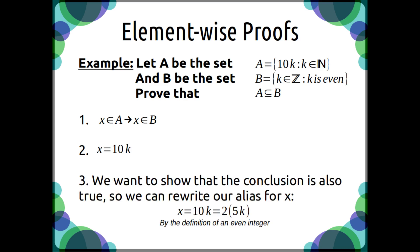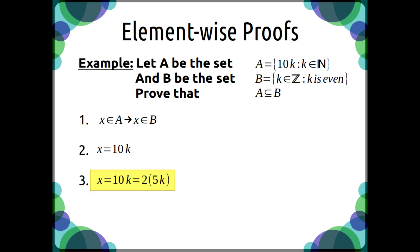From there, we just want to rewrite the equation so that we can show that x is also an element of B. So we can simply rewrite 10 times k to 2 times 5 times k, and by the definition of an even integer, we've proven that this is true. So just showing each step, we would have this.